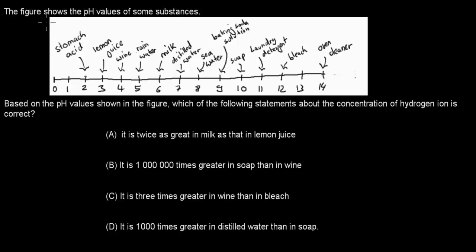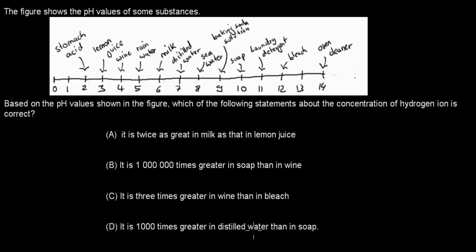The next question: The figure shows the pH values of some substances on a scale from 0 to 14 — stomach acid at 2, lemon juice at 3, wine at 4, rainwater at 5, milk at 6, distilled water at 7, sea water at 8, baking soda at 9, soap at 10, laundry detergent at 11, bleach at 12, oven cleaner at 14. Based on the figure, which statement about the concentration of hydrogen ions is correct? A) twice as great in milk as in lemon juice; B) a million times greater in soap than in wine; C) 3 times greater in wine than in bleach; D) 1,000 times greater in distilled water than in soap. Pause and attempt.